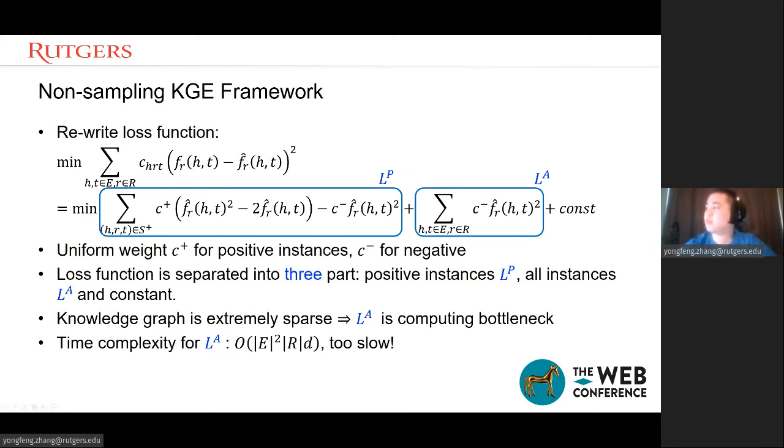We can see here, we use C plus and C minus instead of CHRT for each triple. We set the uniform weight for all positive instances as C plus, and C negative for all negative instances. Since we know the knowledge graph is extremely sparse, the computing bottleneck will locate on the LA. And we can see here, the time complexity of LA is O(E squared times R times D). E is the set of entities, R is the set of relations, and D is the dimension of embedding vectors. We can see it is too slow according to the time complexity. We need to improve the time complexity if we want to use all data.